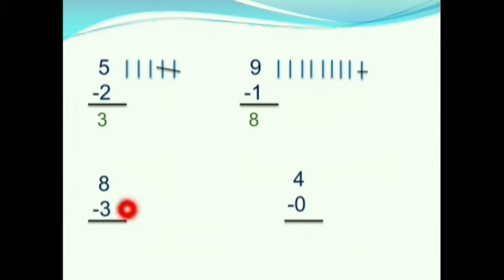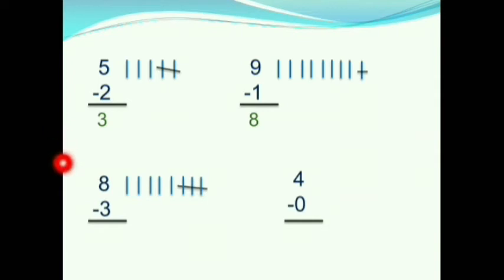Children, see the next question: 8 minus 3. What is 8 minus 3? Let us find it out. First we have 8, so we will draw 8 lines. Next we have 3, so we will cut 3 lines. How many lines are remaining? 1, 2, 3, 4, 5. 5 lines are remaining. So we will write 5. Therefore, 8 minus 3 is equals to 5.